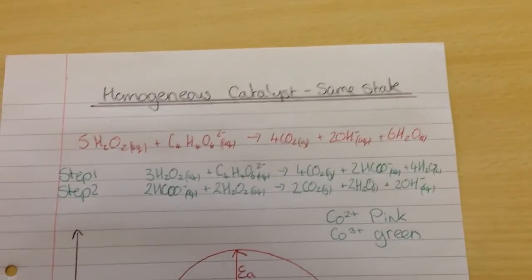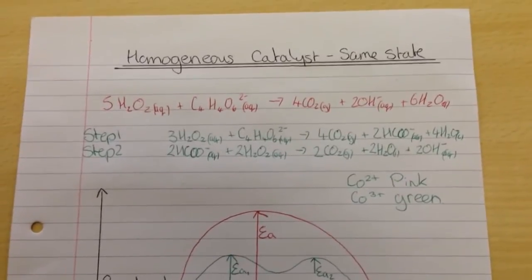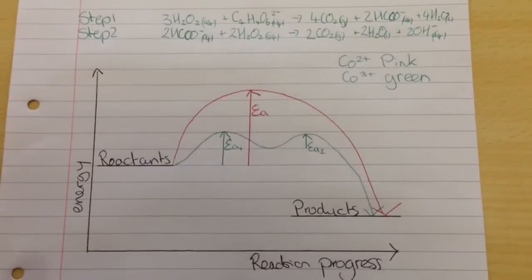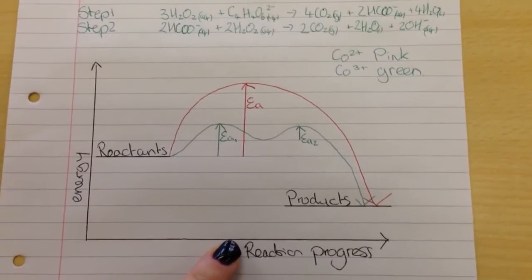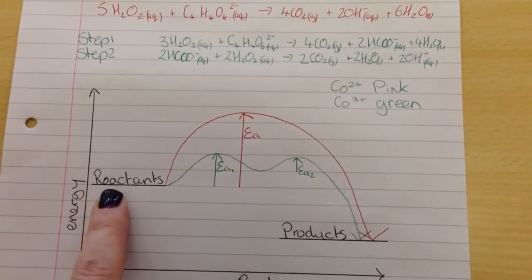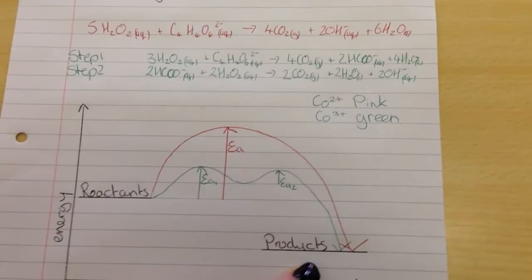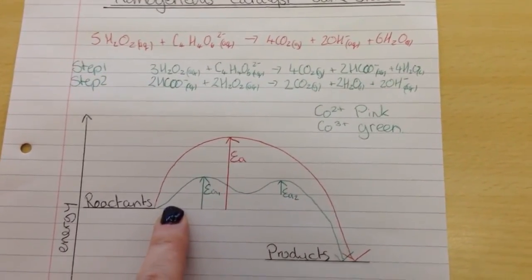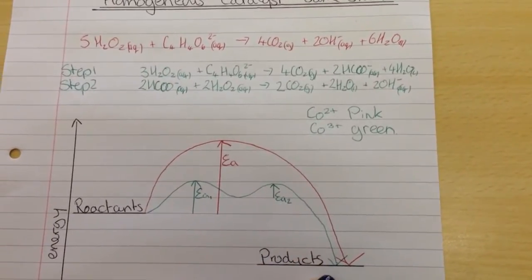This is the reaction that I showed you in the demo today. This is the reaction of a homogeneous catalyst where the catalyst and the reactants are in the same state. What happens here is we have our energy and our reaction progress diagram. The reactants need lots of energy input to get down to the product. But what the cobalt chloride 6 water did was lower the activation energy and turned it into a two-step process.